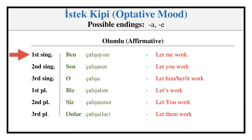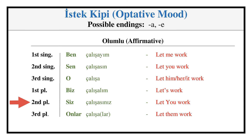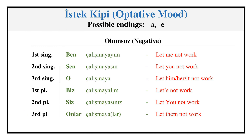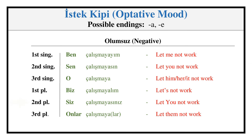Optative Mood — Affirmative: ÇALIŞAYIM, ÇALIŞASIN, ÇALIŞA, ÇALIŞALIM, ÇALIŞASINIZ, ÇALIŞALAR. Negative: ÇALIŞMAYAYIM, ÇALIŞMAYASIN, ÇALIŞMAYA, ÇALIŞMAYALIM, ÇALIŞMAYASINIZ, ÇALIŞMAYALAR.